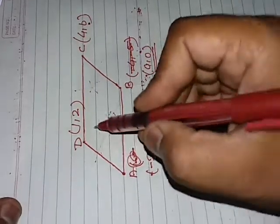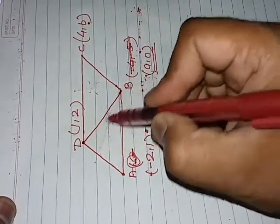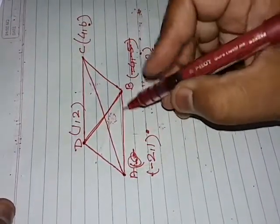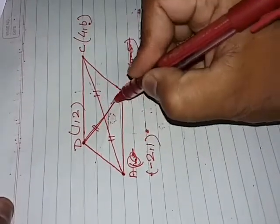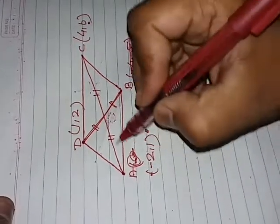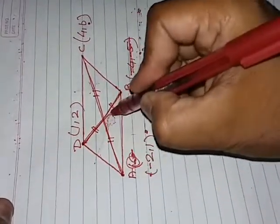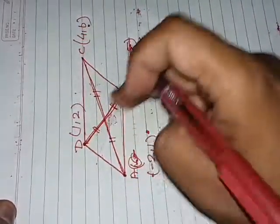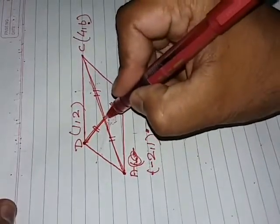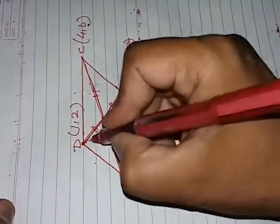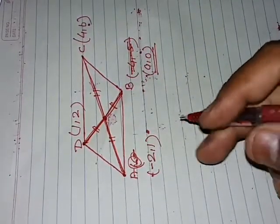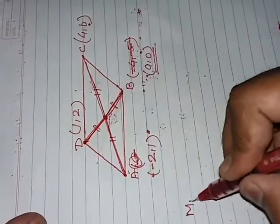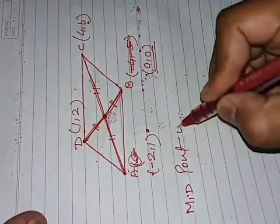There is a property of a parallelogram: its diagonals bisect each other. That means each part — this part, this part, this part, and this part — are all equal to each other. So the diagonal will cut the other diagonal exactly in half, and that intersection point is the midpoint of each diagonal.